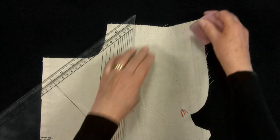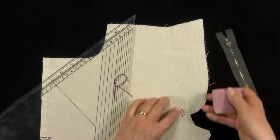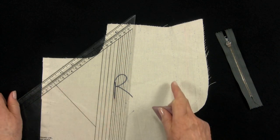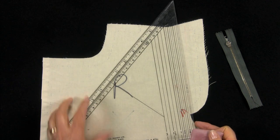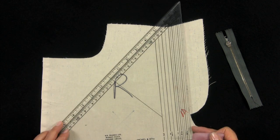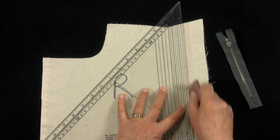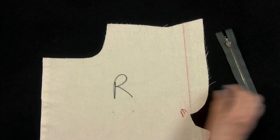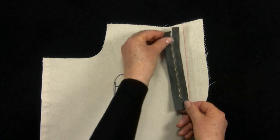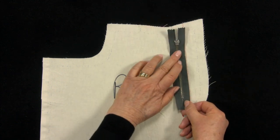I have the centre front line marked with a notch at the waist seam and the dot at the end of the opening. Roll a chalk line 5 eighths of an inch or less away from the centre front towards the fly extension. This is the position for the right zip tape edge.